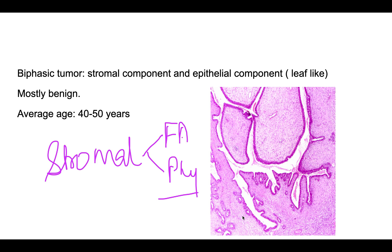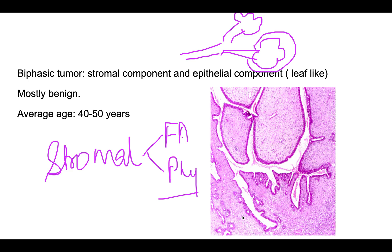Phyllodes tumor is a tumor of the intralobular stroma. In the terminal duct lobular unit, the stroma near the lobule is the intralobular stroma. This intralobular stroma is the neoplastic part in phyllodes tumor, just as it was in fibroadenoma. The epithelial part is not neoplastic, but due to growth factors released from the stroma, the epithelium also proliferates. Therefore, it is classified as a stromal tumor.